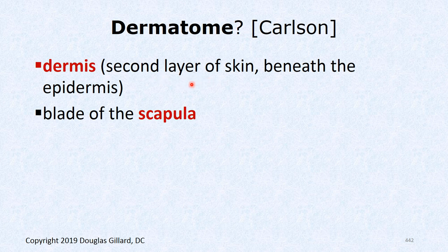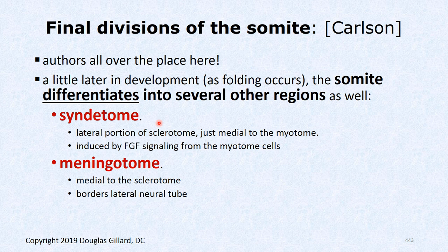The dermatome is the third layer — still epithelial cells. It gives rise to the dermis of the skin and also a lot of the scapula — Carlson calls it the blade of the scapula, meaning the body of the scapula, though not the spine of the scapula or the coracoid process.